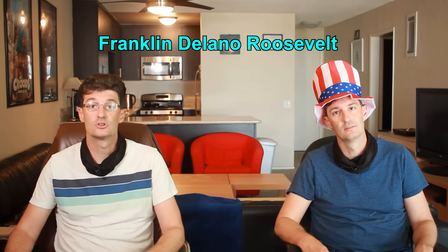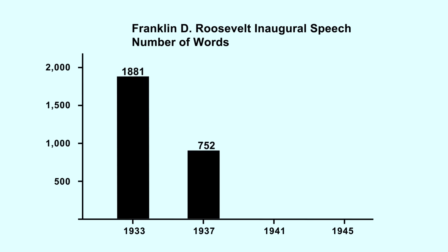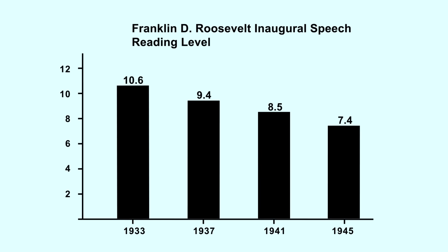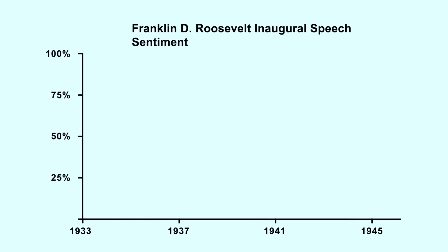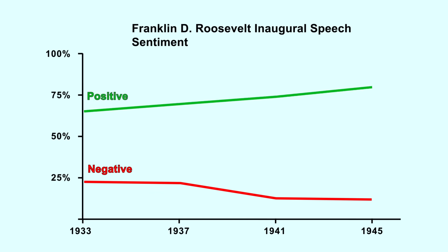What's really interesting is looking at the results from the one president who was elected more than twice: FDR — Franklin Delano Roosevelt — the only president to serve four terms. If we look at the length of each of FDR's speeches, we can see that each one is shorter than the previous one. More interesting is that the reading level of each speech is also less than the previous one. And if we plot the sentiment of each speech, we can see that each speech is less negative and more positive than the previous one.